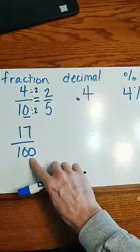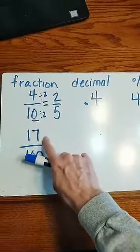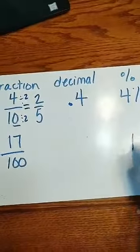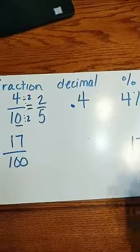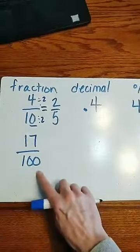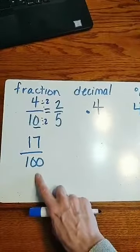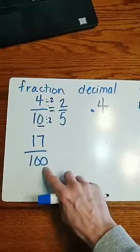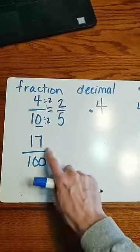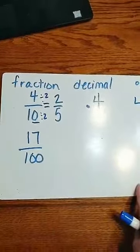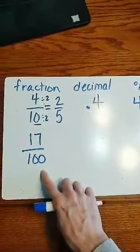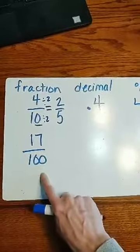That's the easiest one. If it's over 100, we just take that top number, and it's a percent. It has to be over 100 for that to be the percent. Think about it like this. If this was your test grade, you got 17 out of 100, your percent would still be 17%. Hopefully that's not our test grade, but there you go.